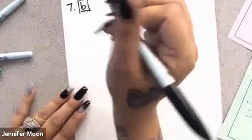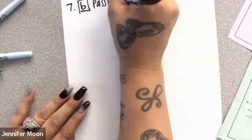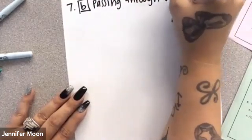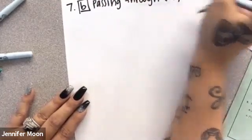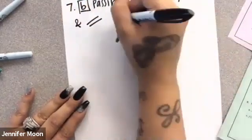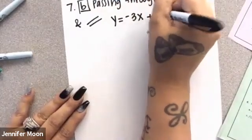It's telling me that it's passing through this point which is negative 5, negative 5 and it's saying it's parallel to the line y equals negative 3x plus 5.